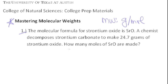The molecular formula for strontium oxide is SrO. A chemist makes 24.7 grams of it, and we need to find how many moles of strontium oxide there are. So the first step is to find the molecular weight, and you can do that by summing up the atomic weights of the atoms in that molecule.